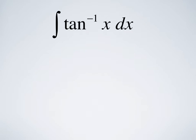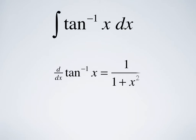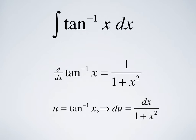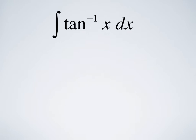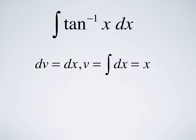Let's do an example: the integral of tangent inverse of x dx. We know that d/dx of tangent inverse of x is 1 divided by 1 plus x squared. So if we take u to be tangent inverse of x, that means du will be dx divided by 1 plus x squared. With that choice, we have to take dv to be dx, and so v would be the integral of dx, which is just x.